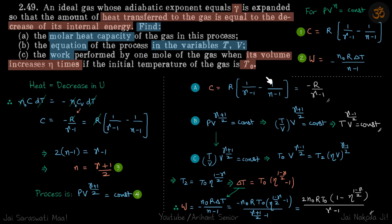Second part: equation of the process in terms of temperature and volume. Let's get rid of pressure and express our process in terms of temperature and volume. Third part: work performed when the volume increases η times.